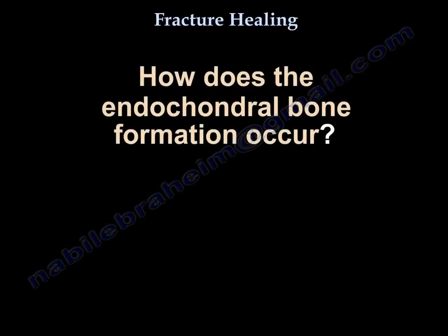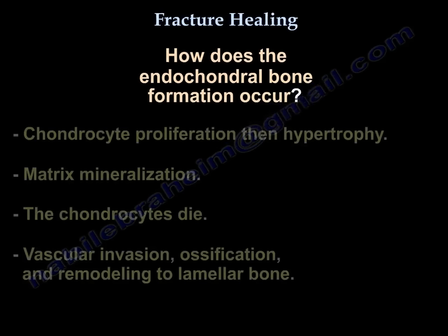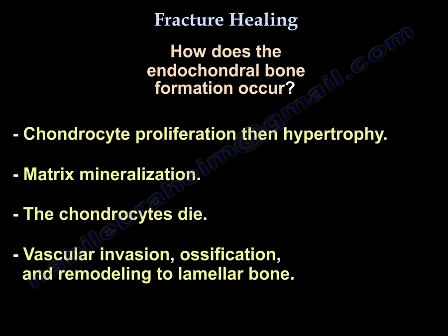How does endochondral bone formation occur? The chondrocytes proliferate, then hypertrophy, then you get matrix mineralization. The chondrocytes die, and then you get vascular invasion, ossification, and remodeling to lamellar bone.